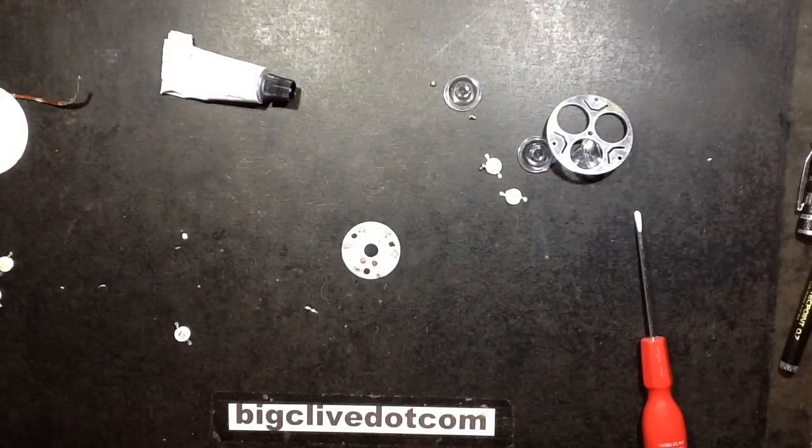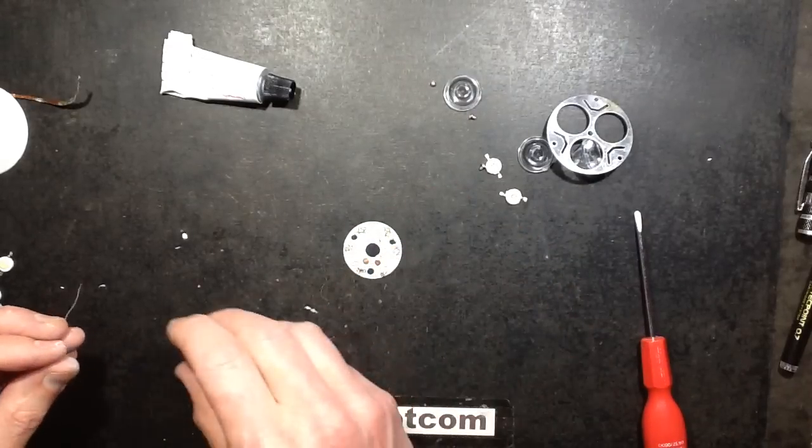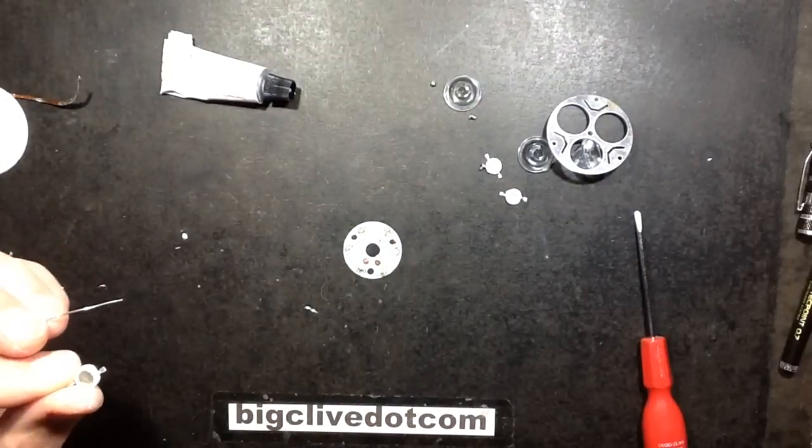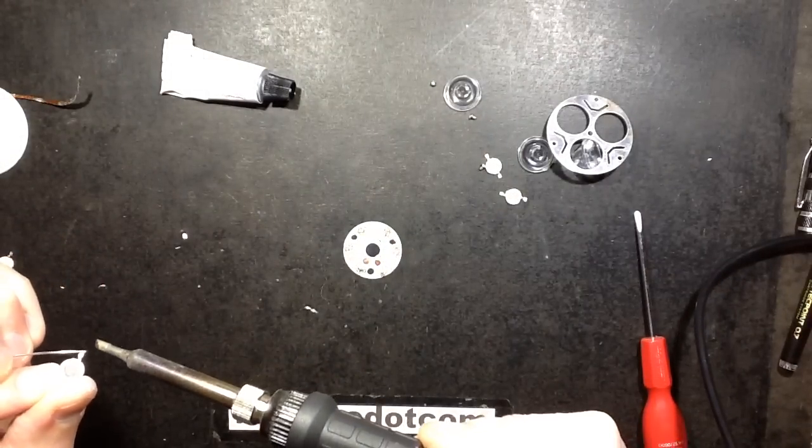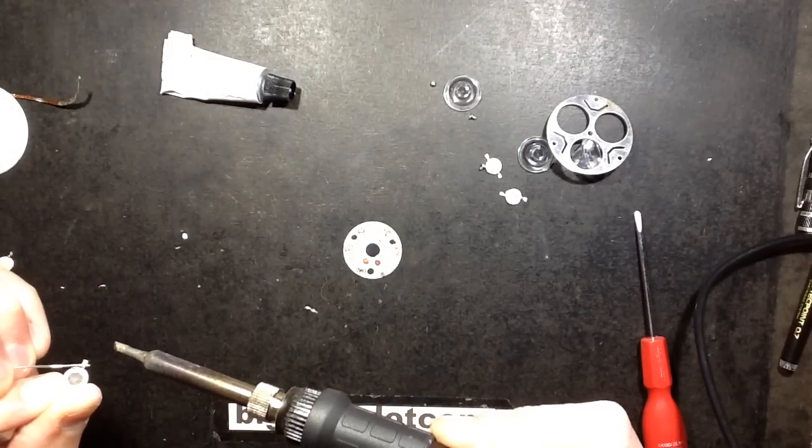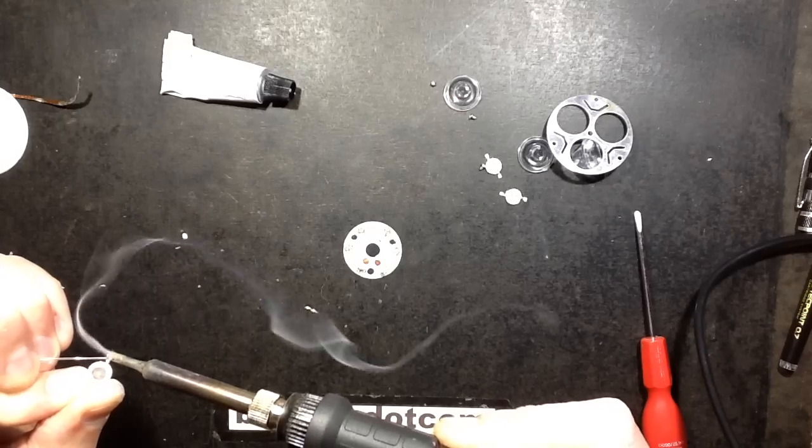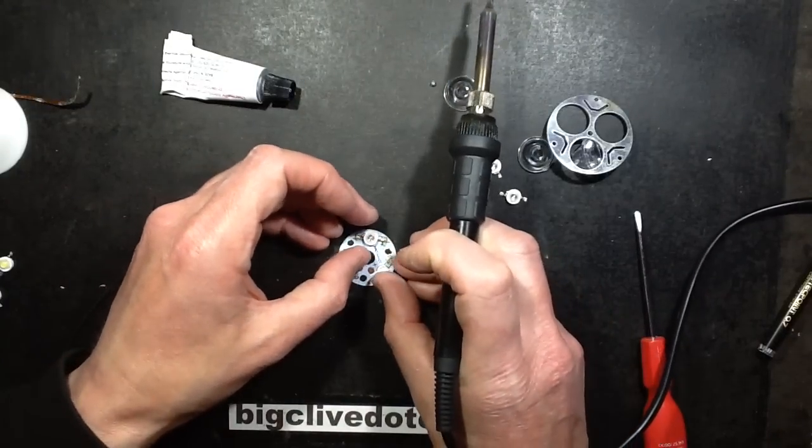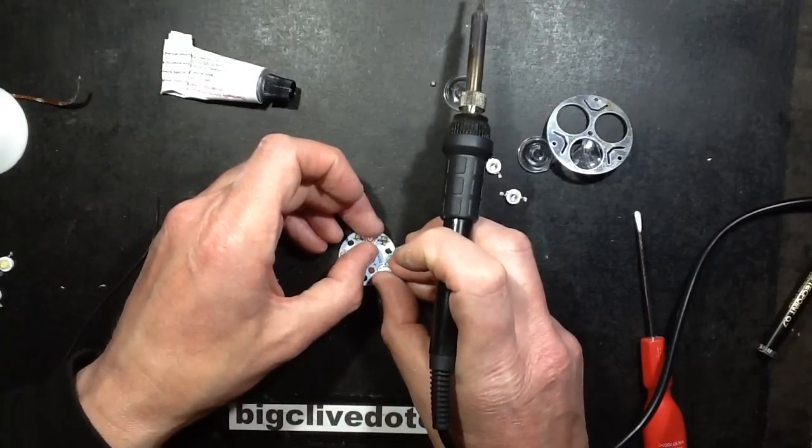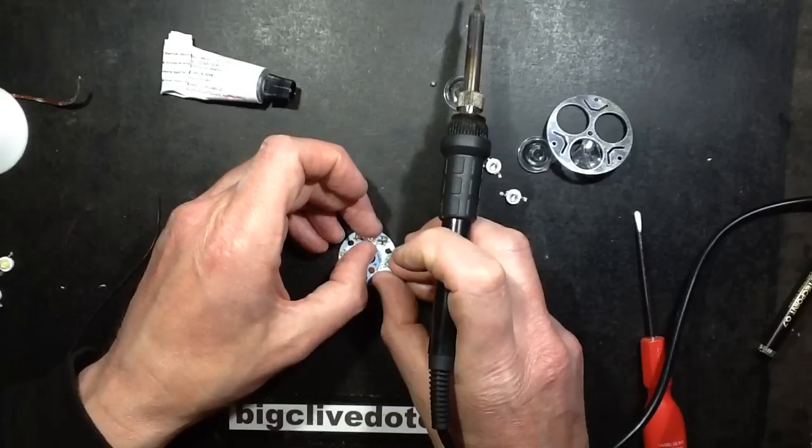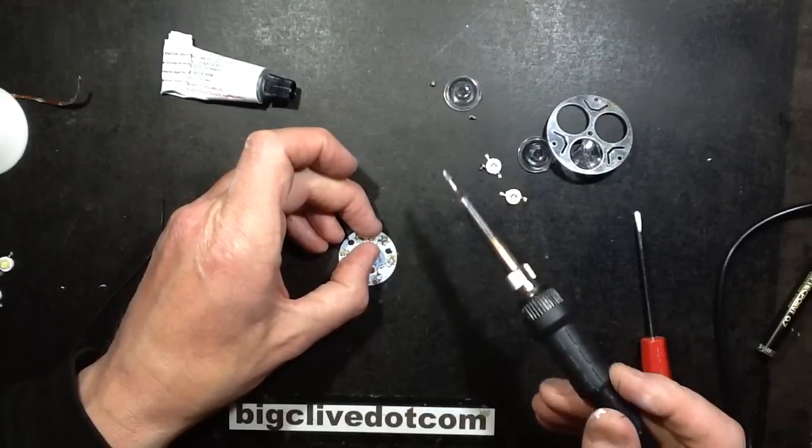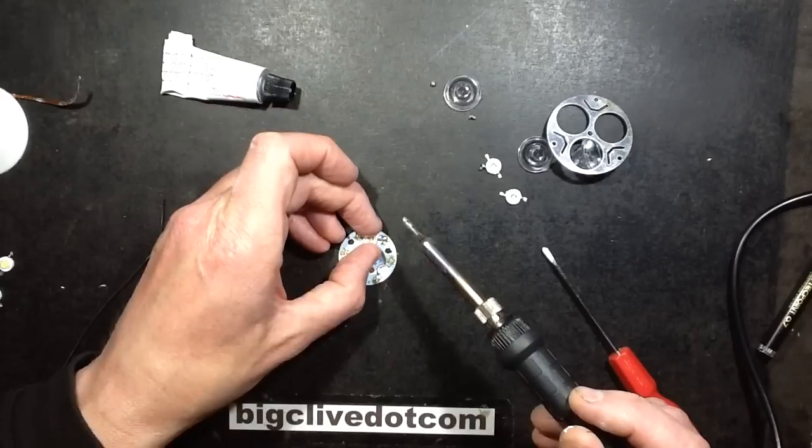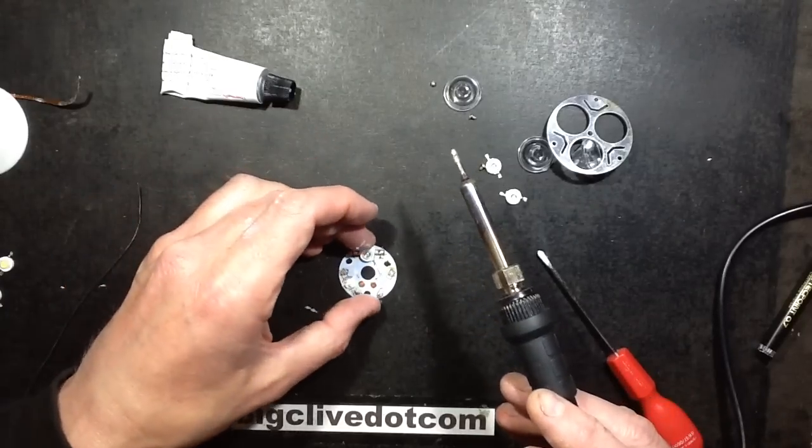I think I will. So I'm going to start with the right hand lead—that's a positive—so I'm just going to tin the lead slightly and reflow it. So that's me putting a little bit of solder on it. I'm going to try and line it up as centrally as possible and reflow that. That doesn't look too bad does it?